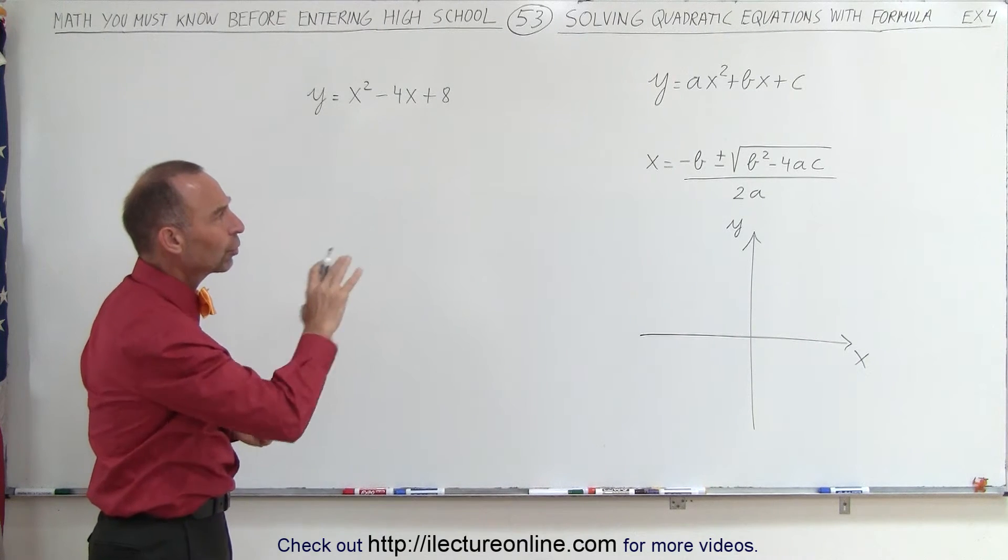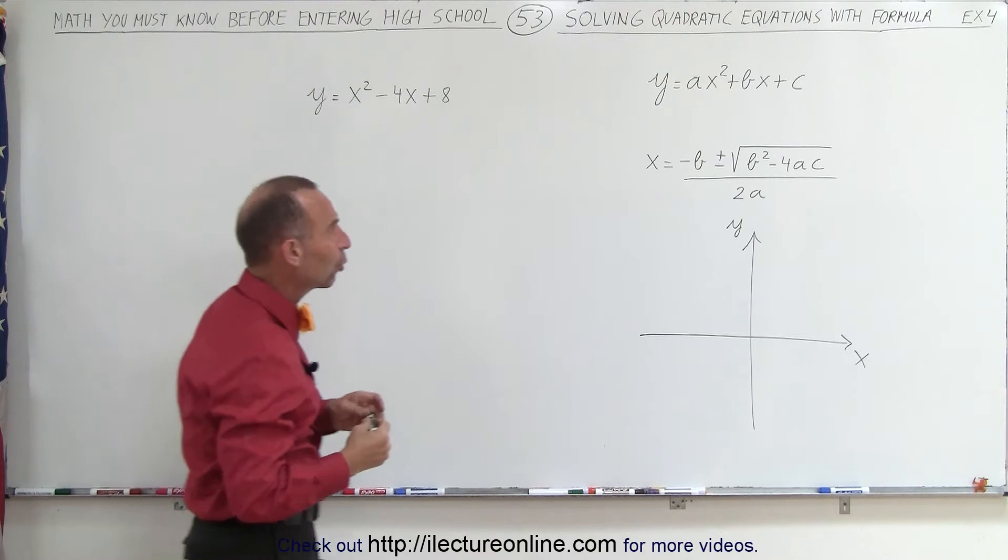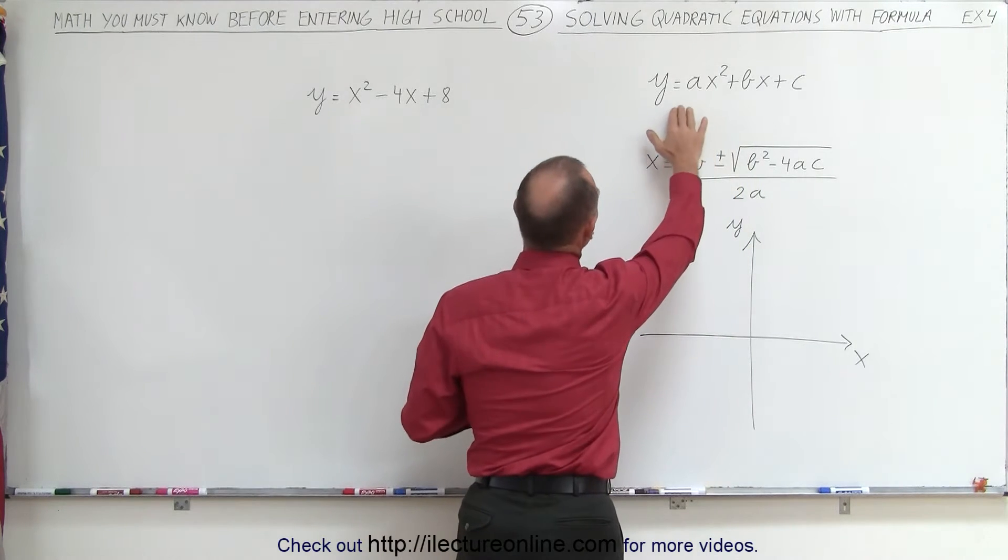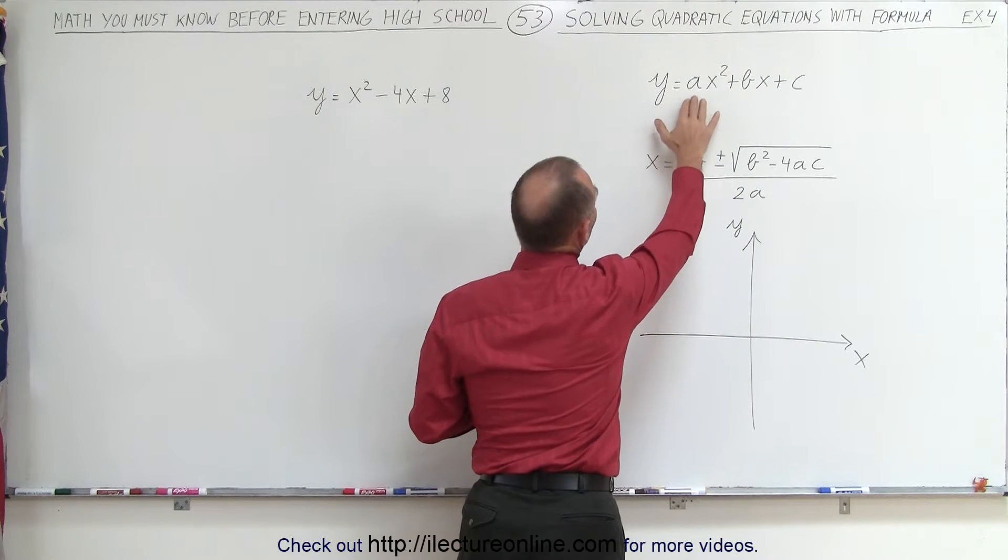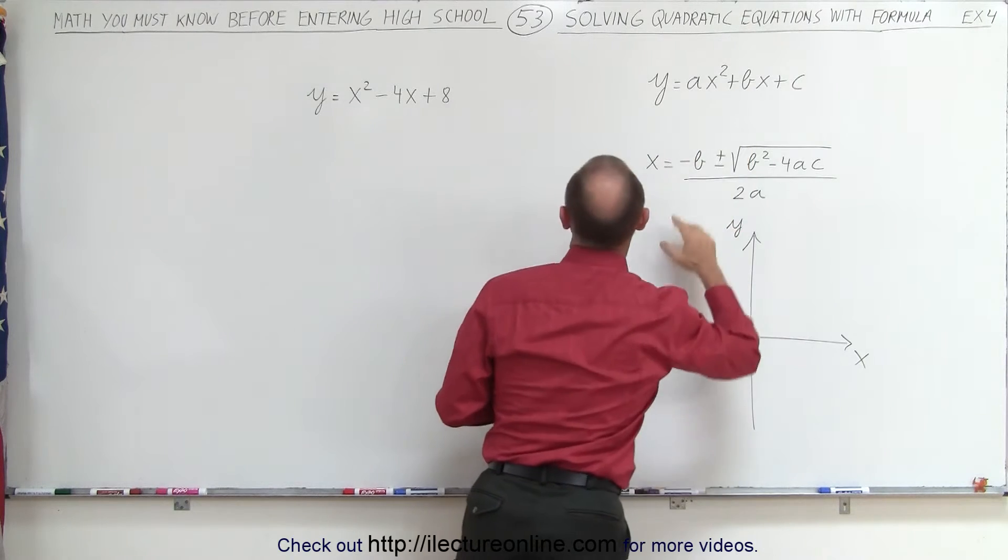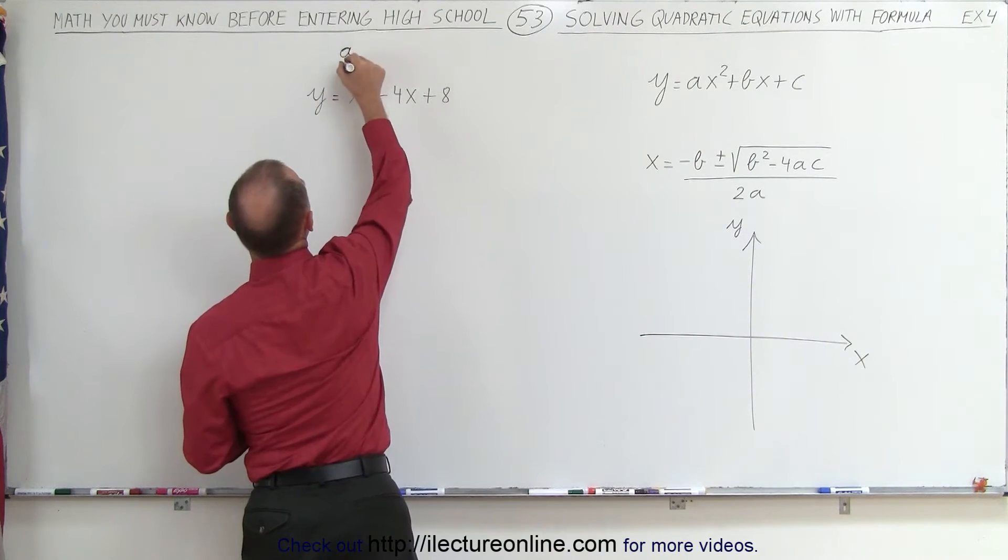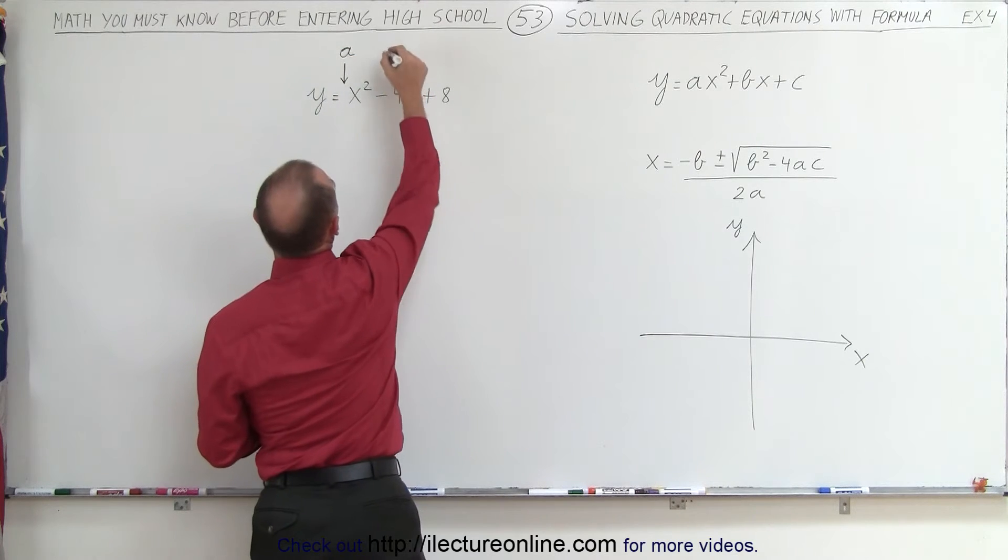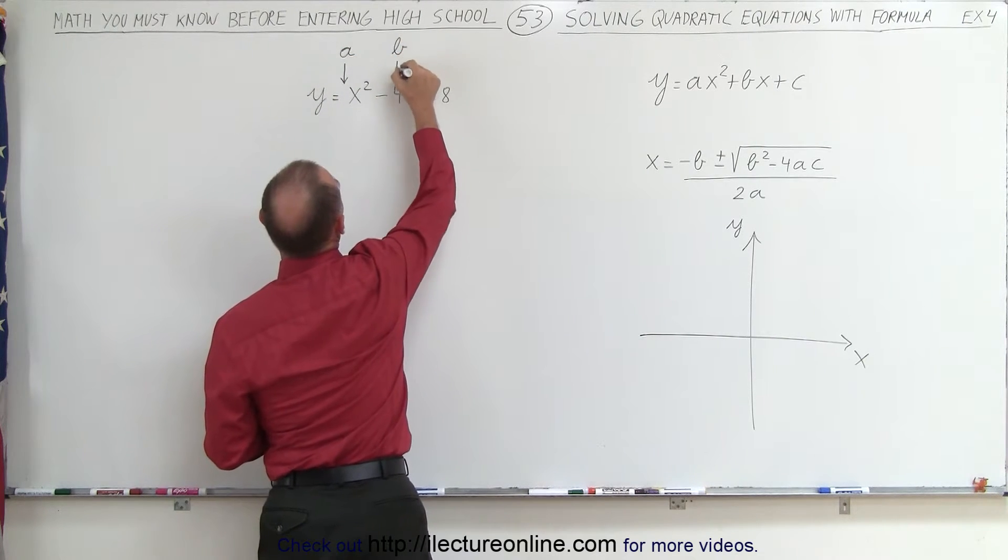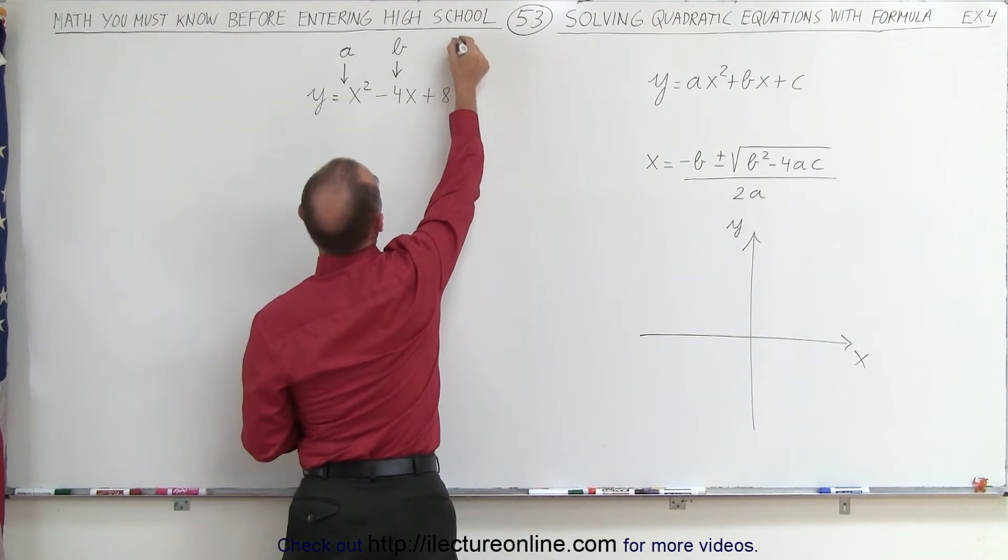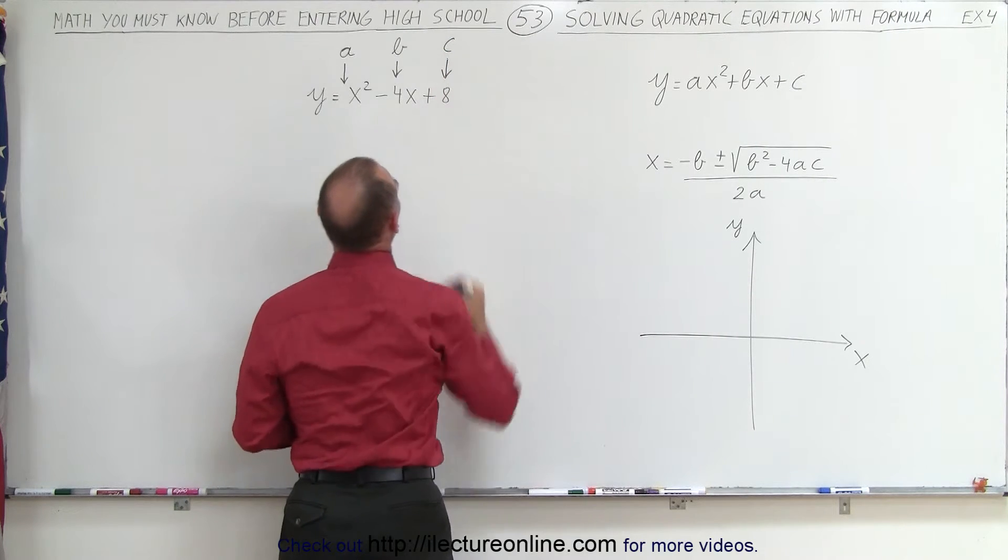I also put on the board the quadratic formula. The general equation, the general quadratic equation, can be written as y equals ax squared plus bx plus c. If we go over here, we can realize a is represented by the number 1, b is represented by the number negative 4, and c is represented by the number 8.